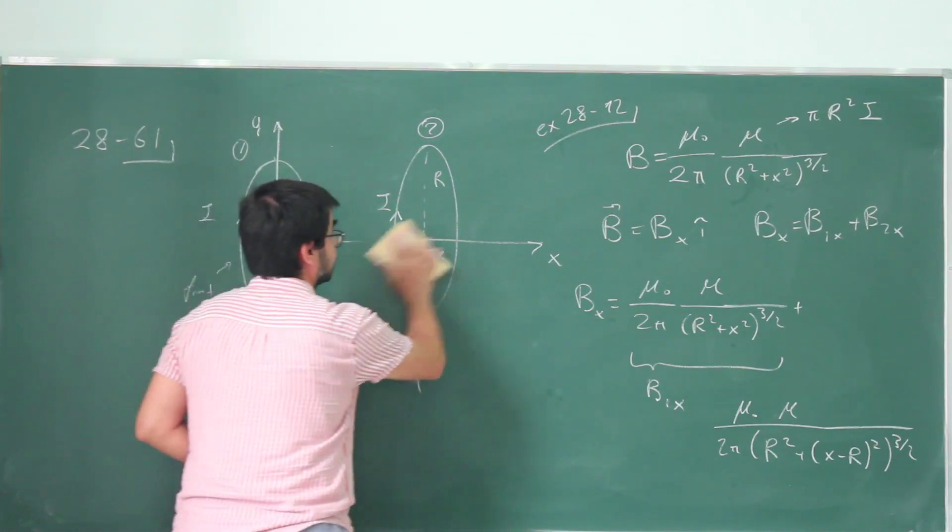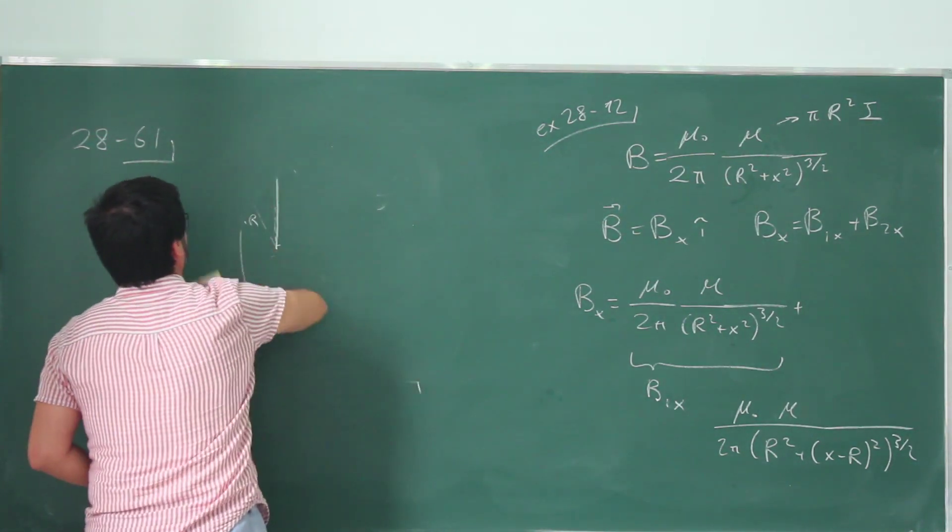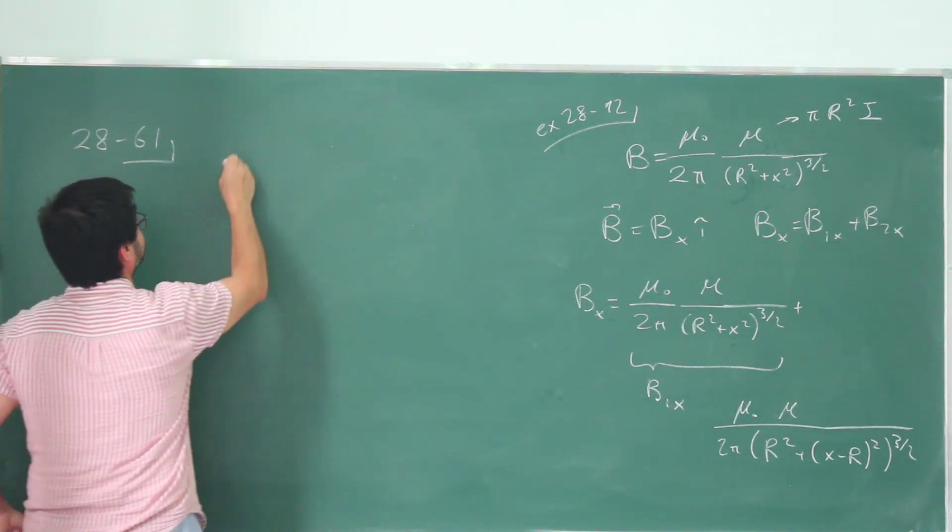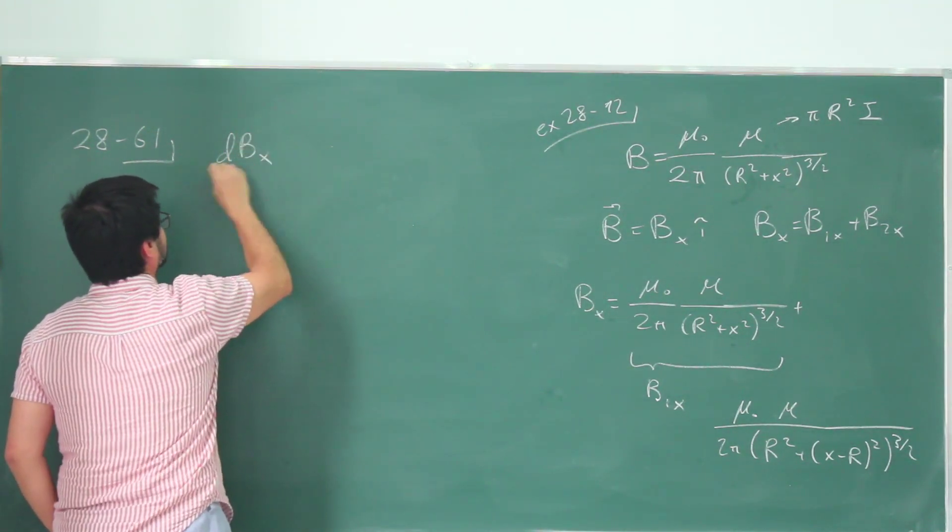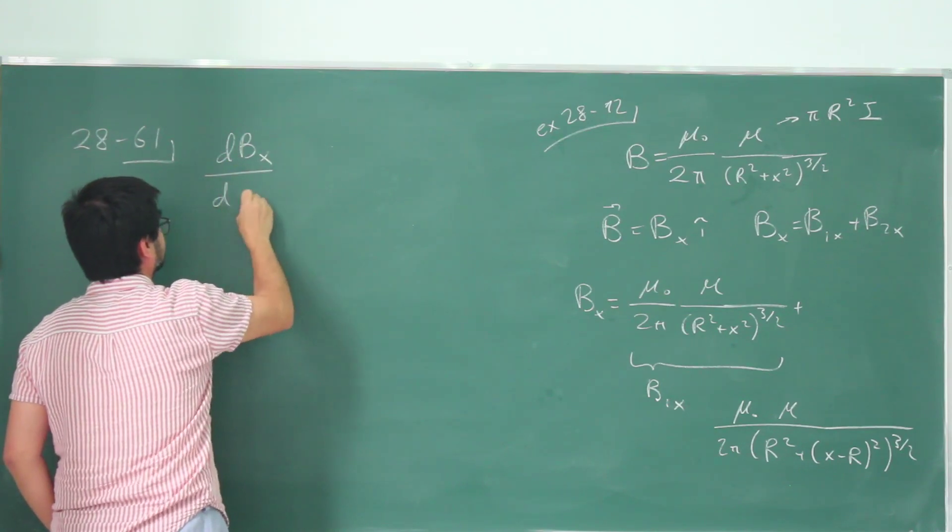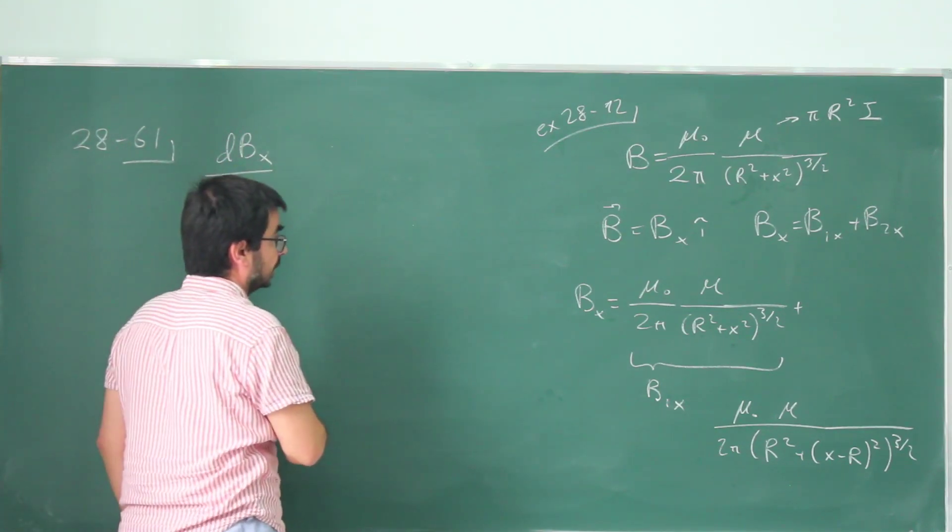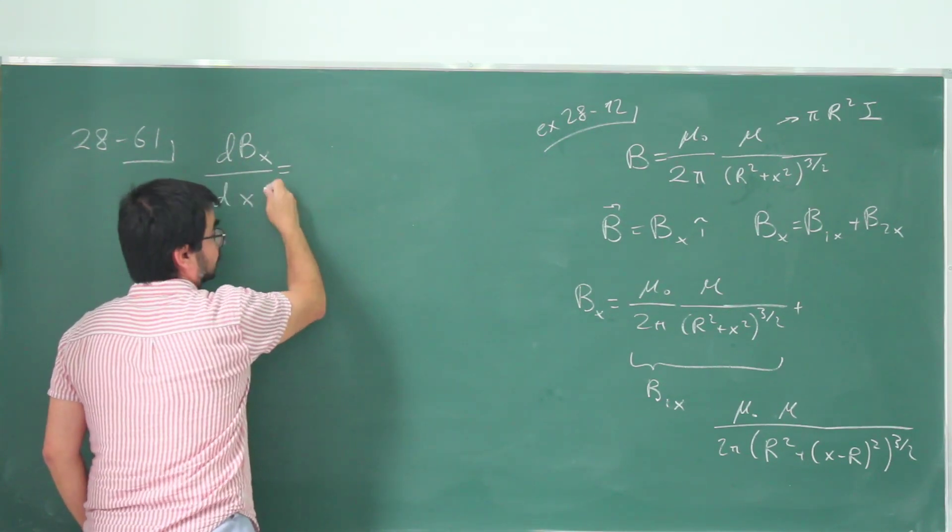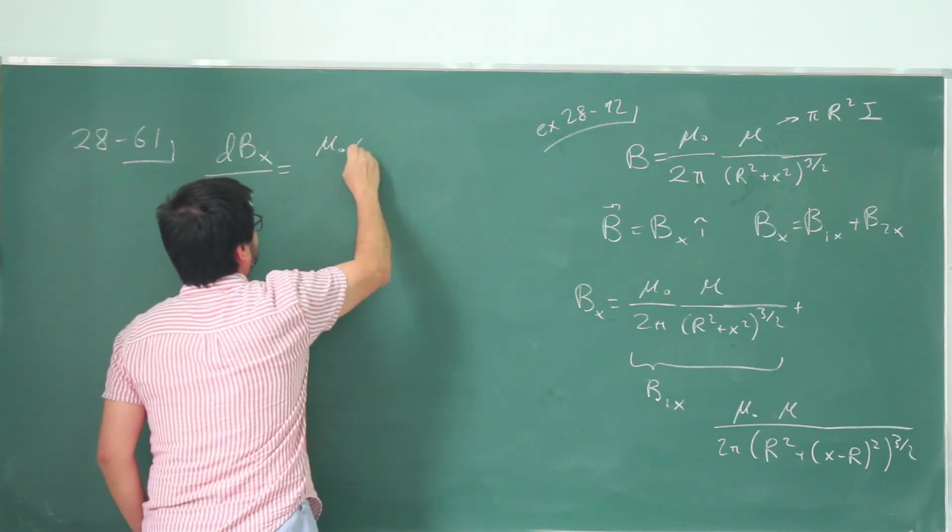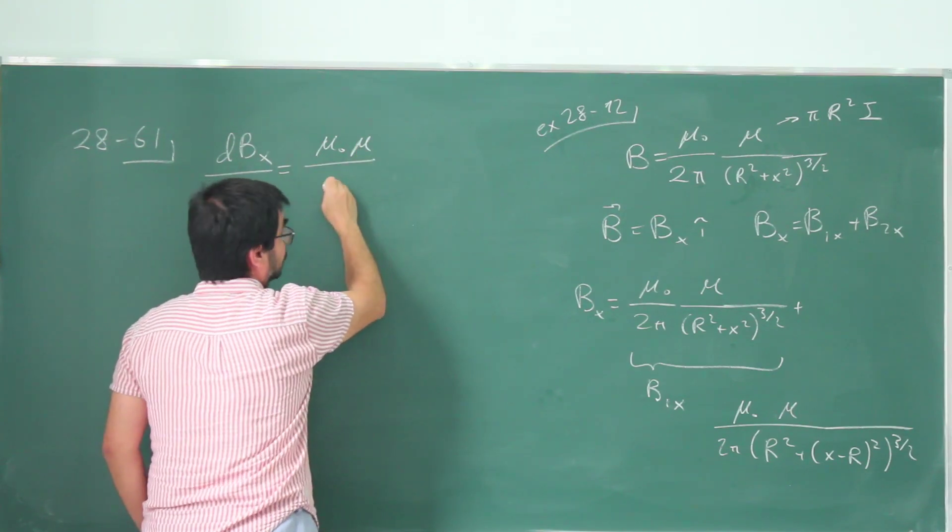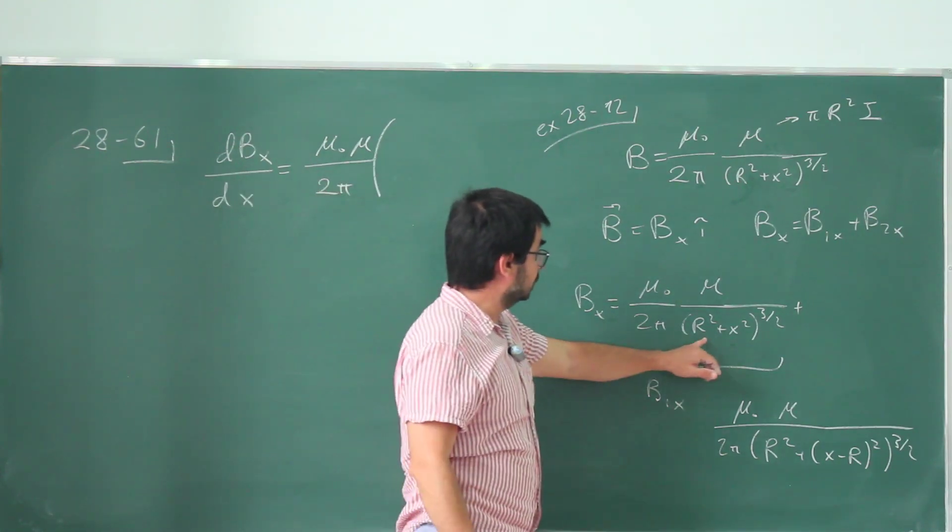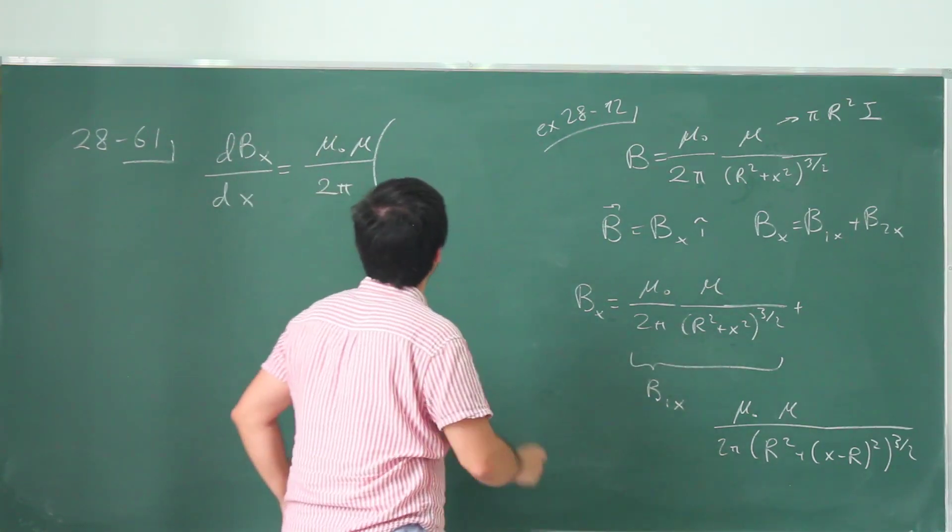So let's erase this and try to figure this out. So I'm going to take the derivative dB dx, which is just B along the axis. And so this is going to be mu 0 mu over 2 pi. So this is a common factor.